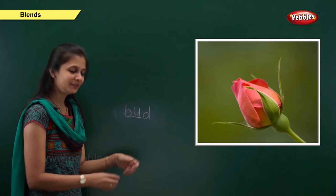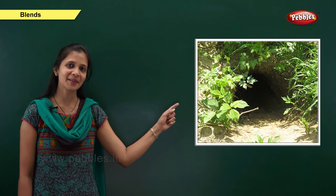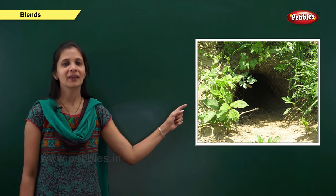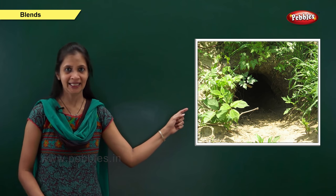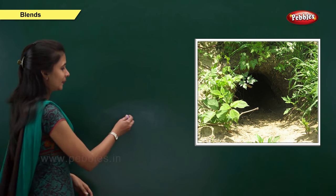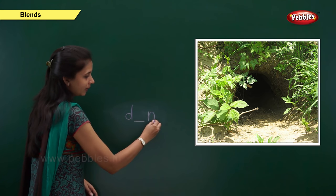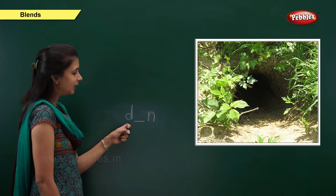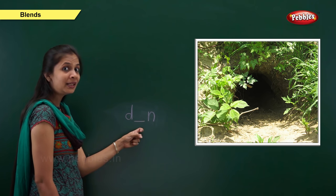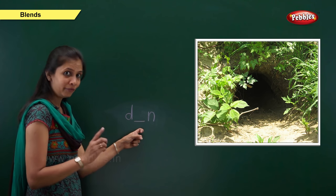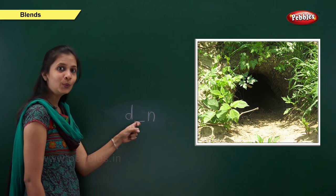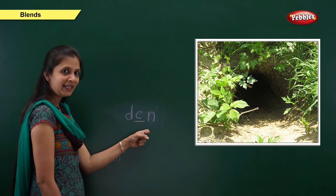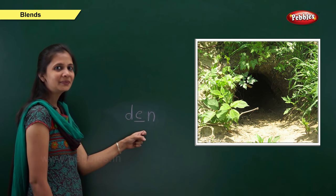Next one. Which picture is this? Yes, it is den. What is the sound of this word? It is d, a, n. The beginning sound is 'd', the letter is d. The ending sound is 'n', the letter is n. Which vowel comes in the middle? It is e. So: d, e, n — den.